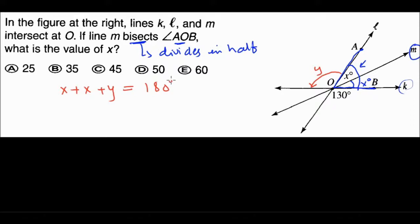So what's Y? Well, Y is a vertically opposite angle pair with 130 degrees. So Y has to be 130. You see how they are opposite to each other? So Y has to be 130.